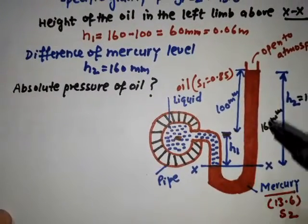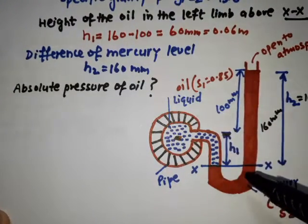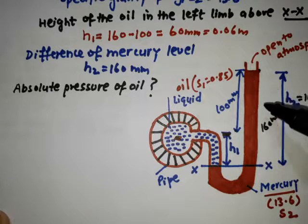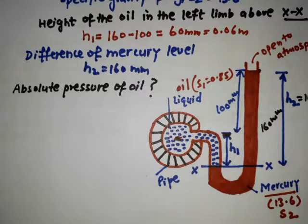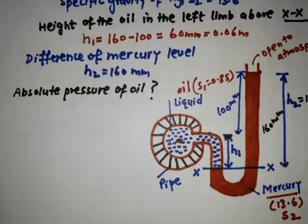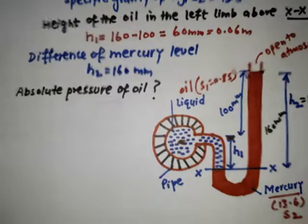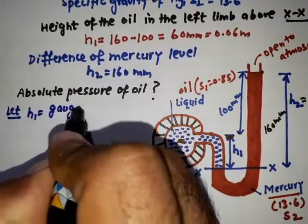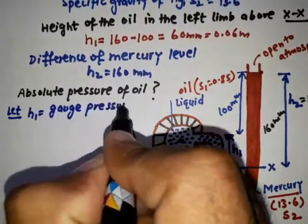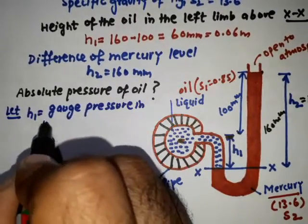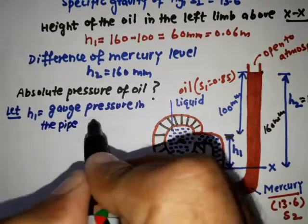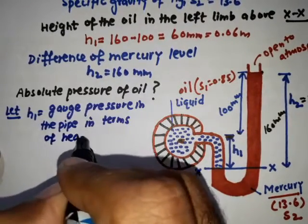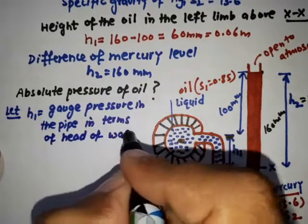From the diagram, this is an example of positive pressure, because the mercury level H2 is present in the right limb (in negative pressure, this value would be zero). Since this is positive pressure, we need to find the gauge pressure H in terms of head of water, and P in terms of kN per meter square.